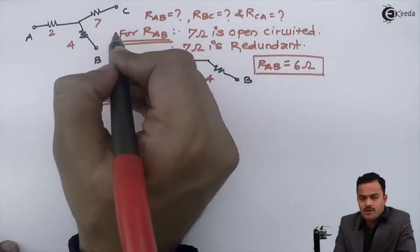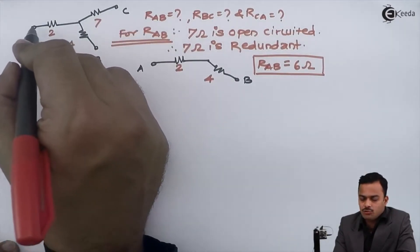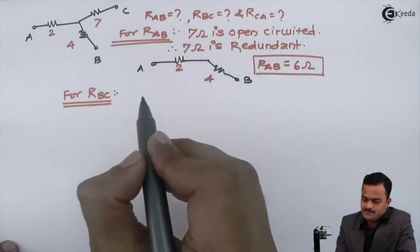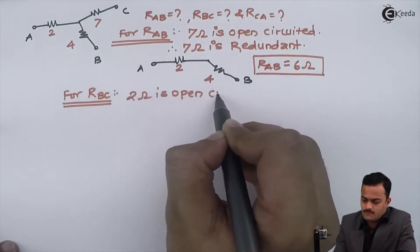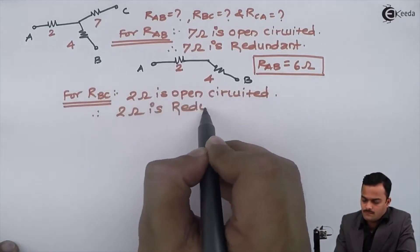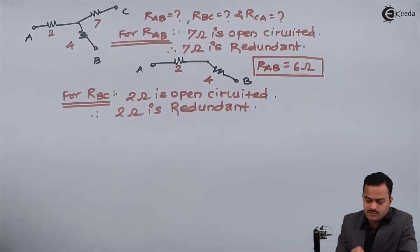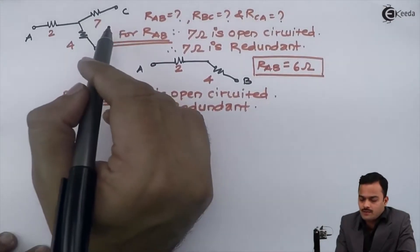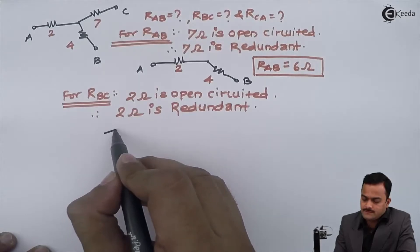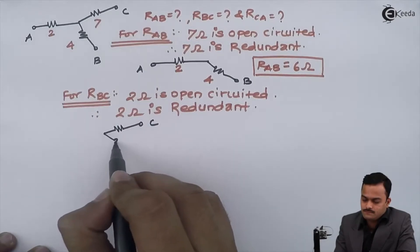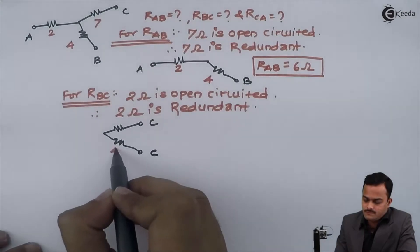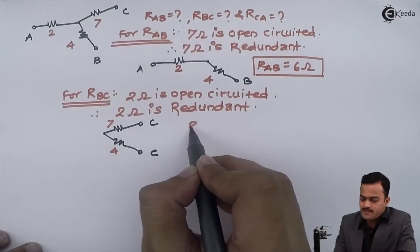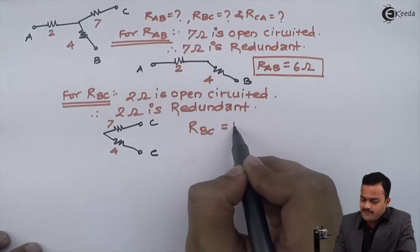For R_bc, the points of interest are B and C. Point A is now the redundant point because it is an open end, so 2 ohm is open circuited and becomes redundant. You are not supposed to consider that resistor in the calculation of R_bc. The circuit becomes a simple series connection of 4 ohm and 7 ohm, giving R_bc equal to 11 ohm.